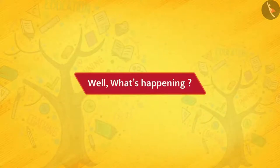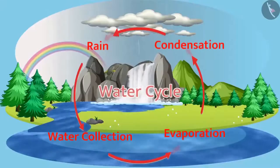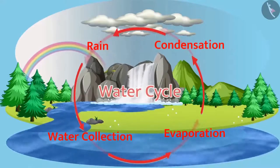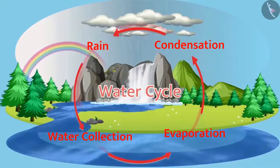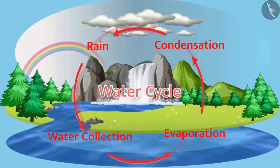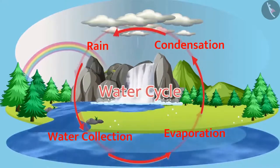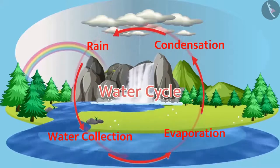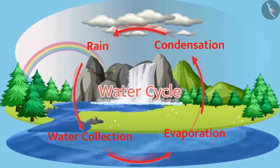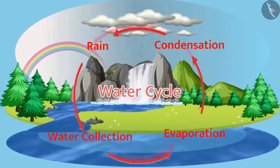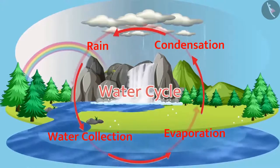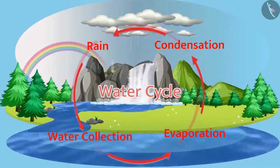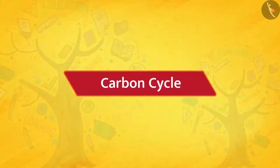So what's happening? The water evaporates from the reservoir and falls to the ground in the form of rain and joins the water bodies. Then again the water evaporates from the reservoir. In this way, water is moving in a circular manner, which is called the water cycle.